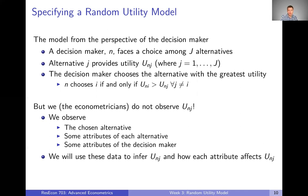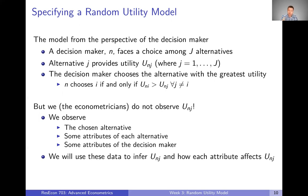To put it in more lay terms, the decision maker looks at all their possible alternatives, ranks them, and chooses whichever one gives the most utility. Here's the problem though: we the econometricians don't actually observe utility. We can't see how many utils people are getting from different alternatives. What we do observe is the chosen alternative, some attributes of each of the alternatives, and maybe some attributes of the decision maker. We're going to use these pieces of data to infer what utilities must have been, and how each of those observed attributes affects utility.